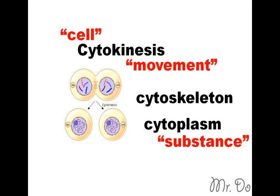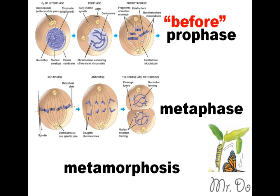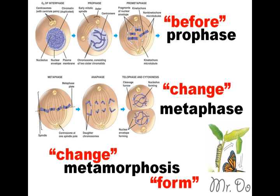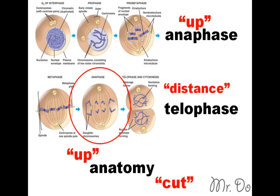Prophase — the word 'pro' in Latin means before, so it's a before phase. Metaphase — 'meta' comes from a word like metamorphosis, where 'morphosis' means form and 'meta' means change, so metaphase is a change phase. Anaphase — the word 'ana' means up. Like the word anatomy: 'tomy' means cut and 'ana' means up, so anatomy is the study of cutting up a person. And anaphase is an up phase — it's when the chromosomes are splitting up.